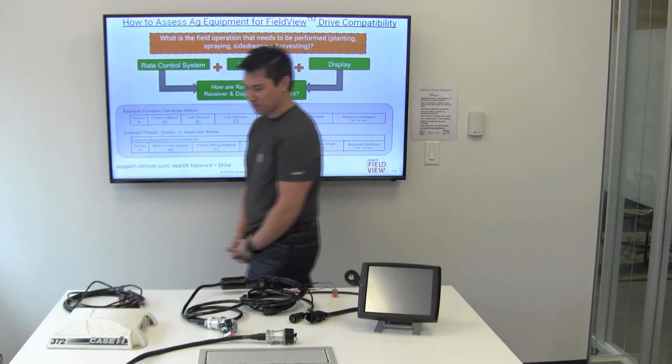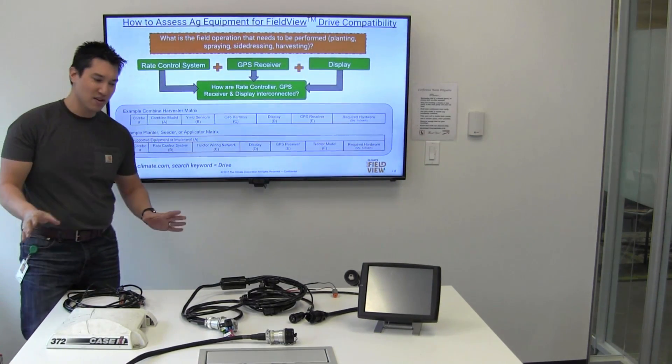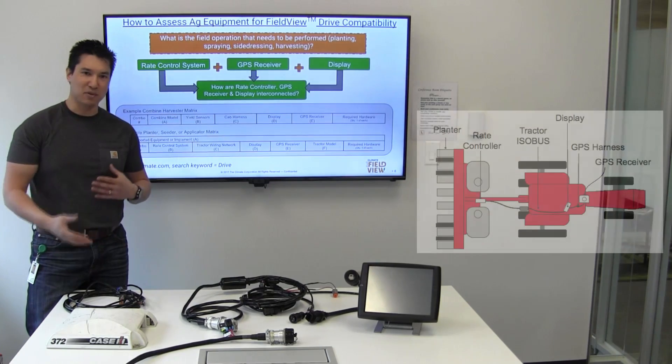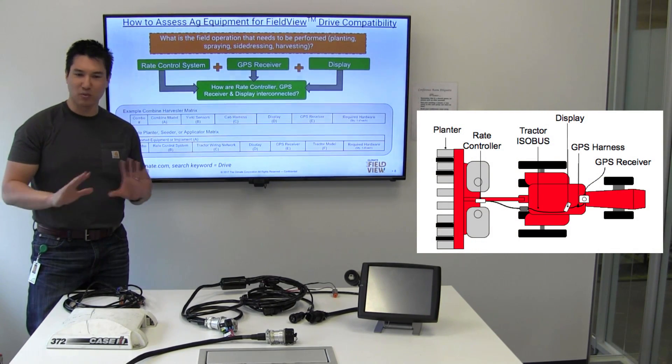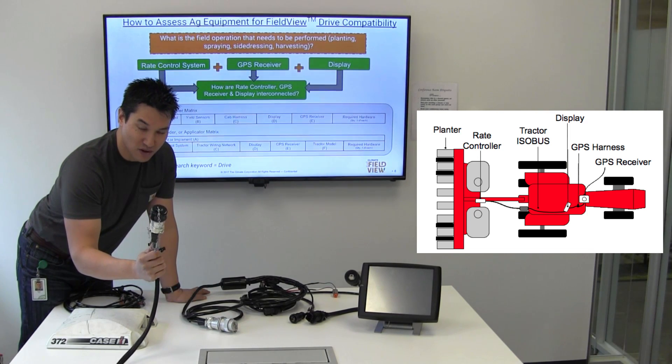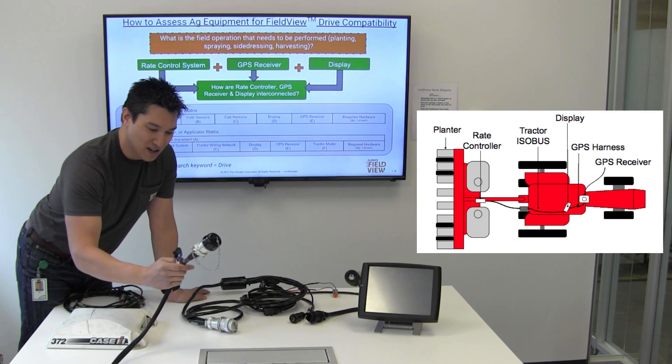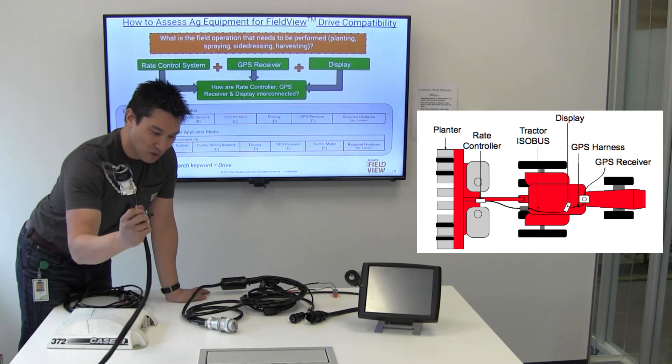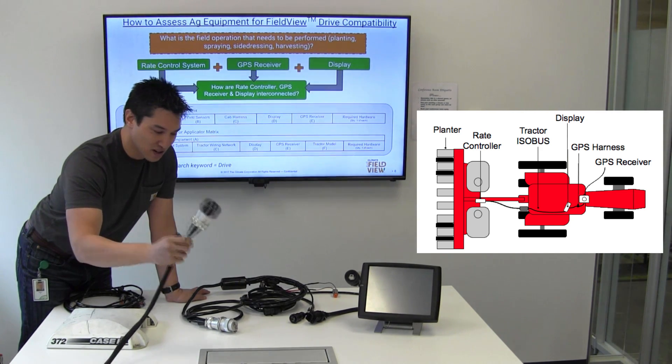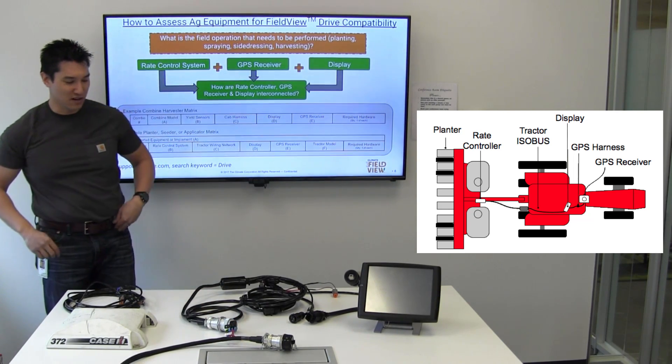What is the rate control system? The rate control system would be the devices or the modules that are on the planter or an applicator or spreader or whatever it may be. Those modules are usually installed on the implement themselves. An implement harness will usually be running along the tongue and be located right around the hitch area of the implement.